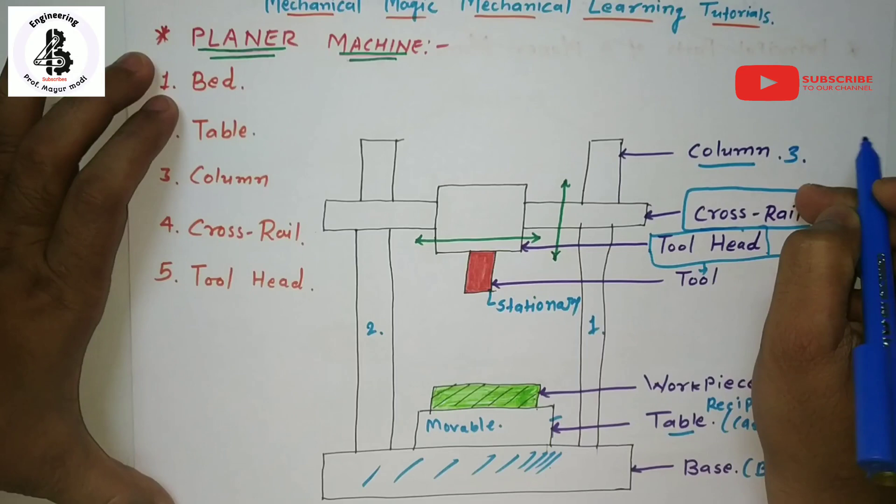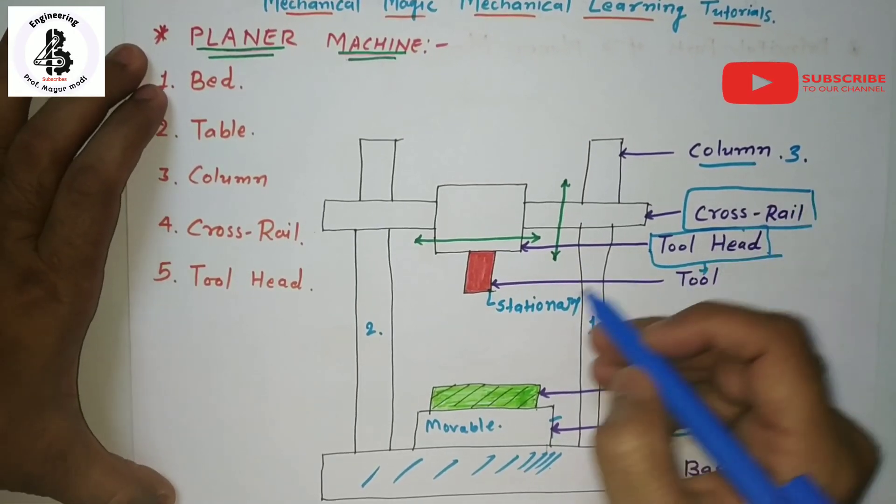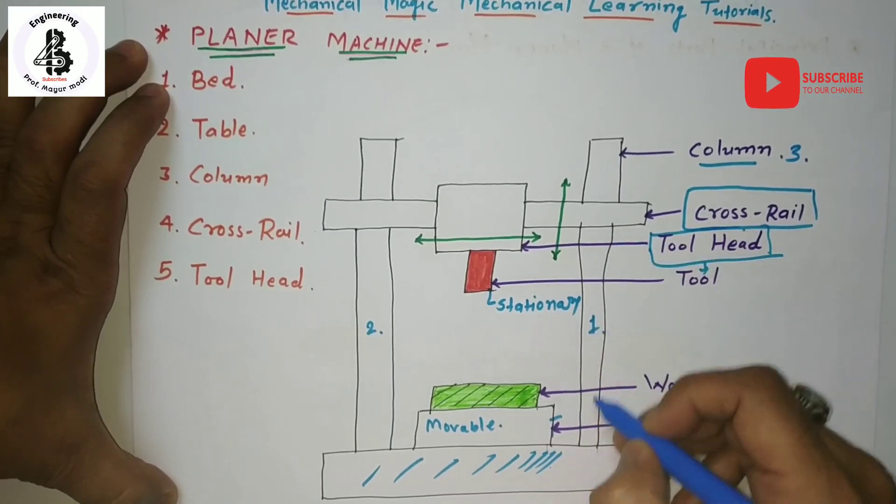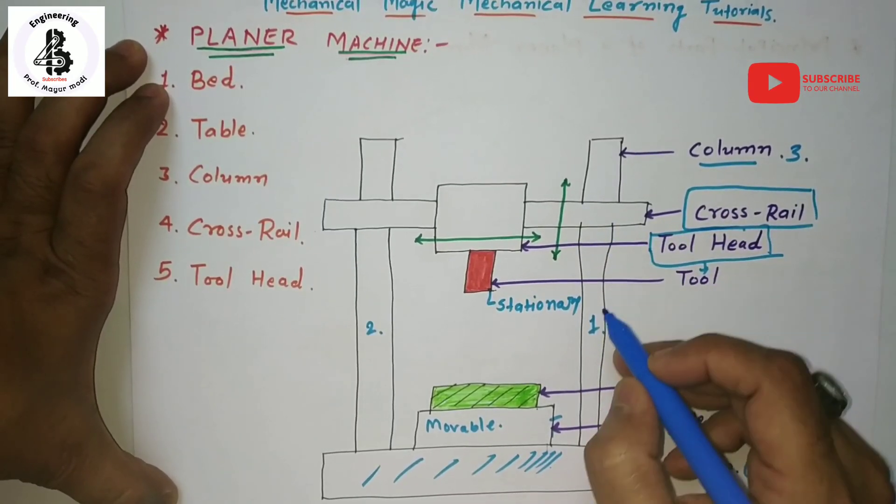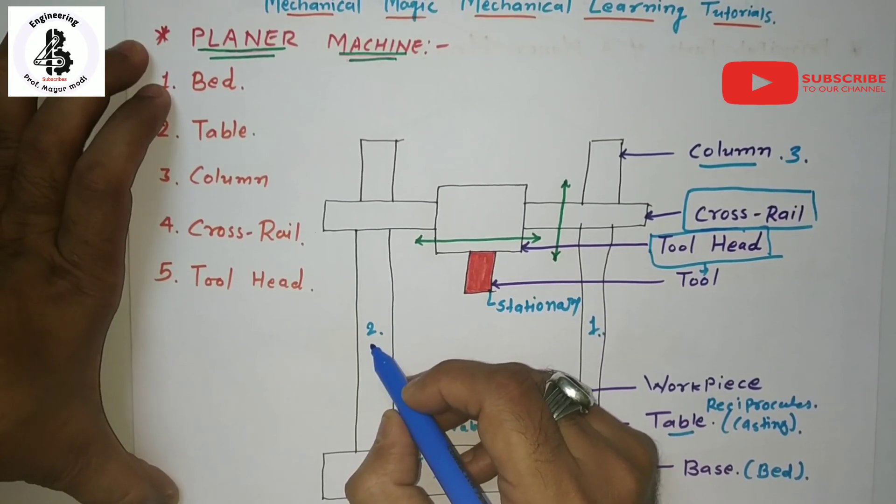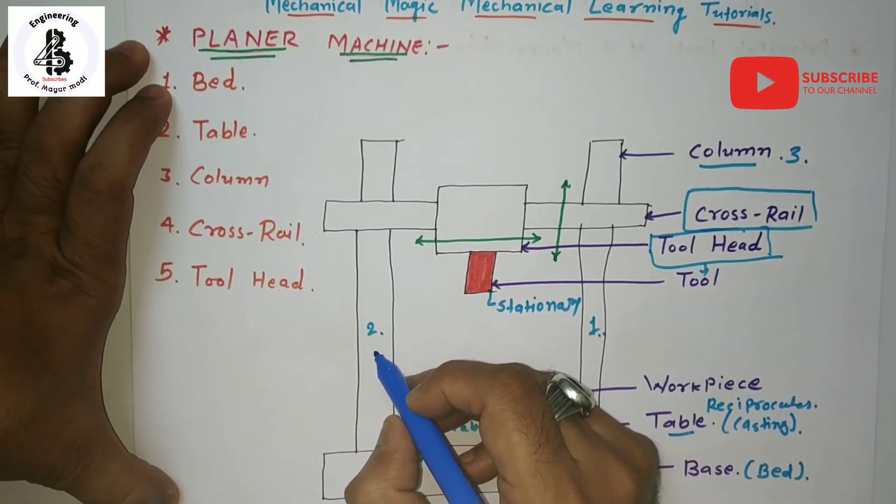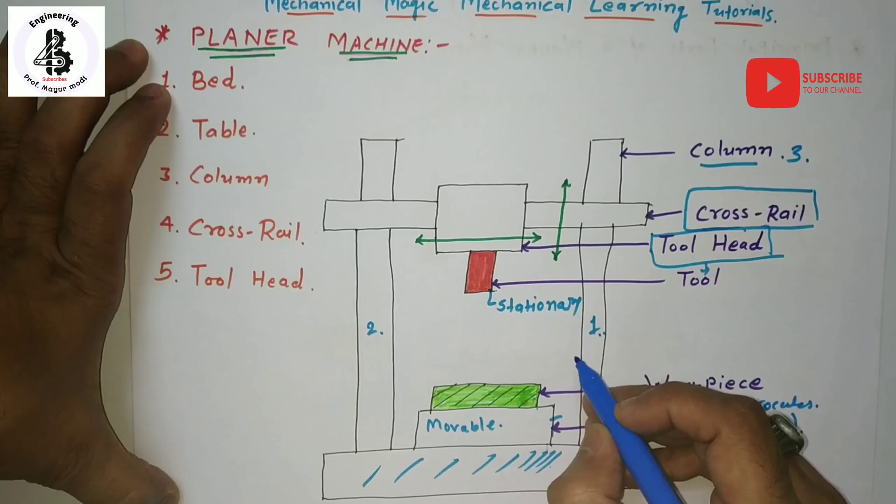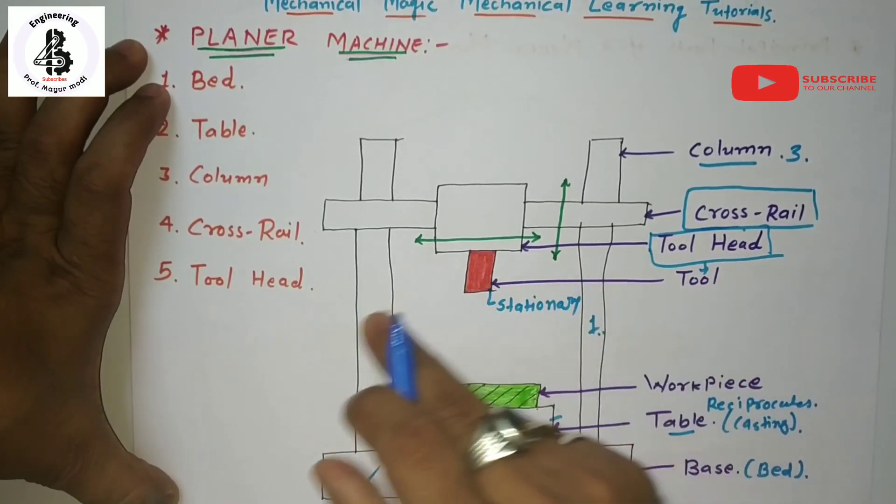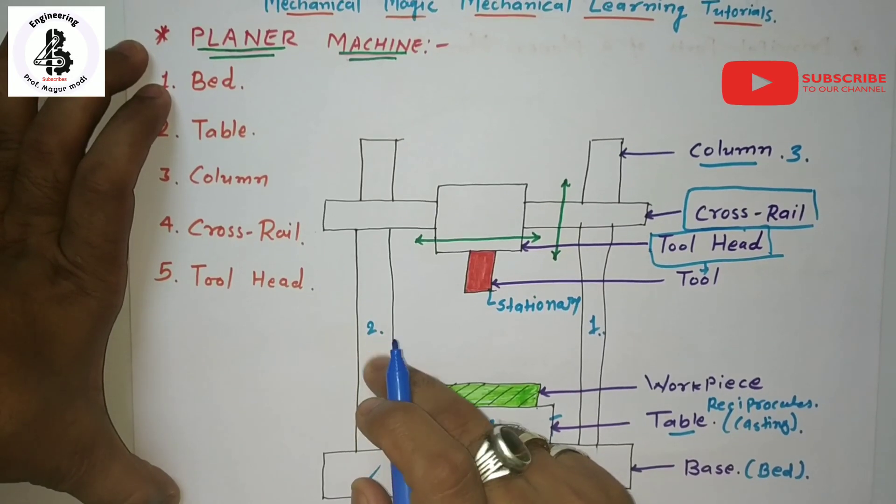Third one, the column. Basically columns are called uprights. Two columns are used for the planer machine and they are placed on each side of the bed, one here and the second one over here.